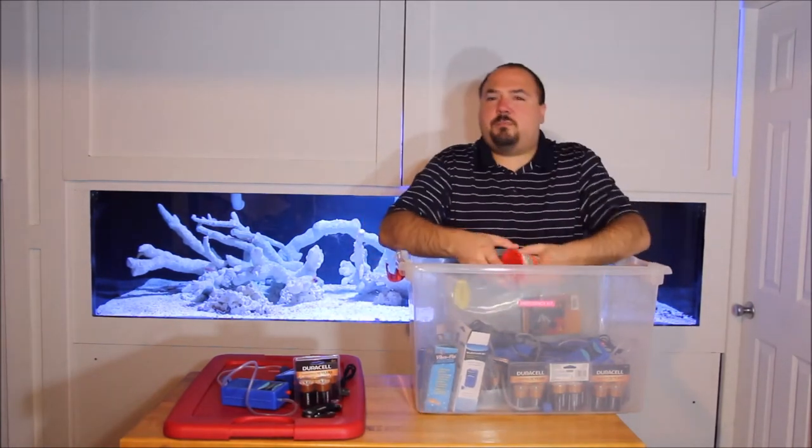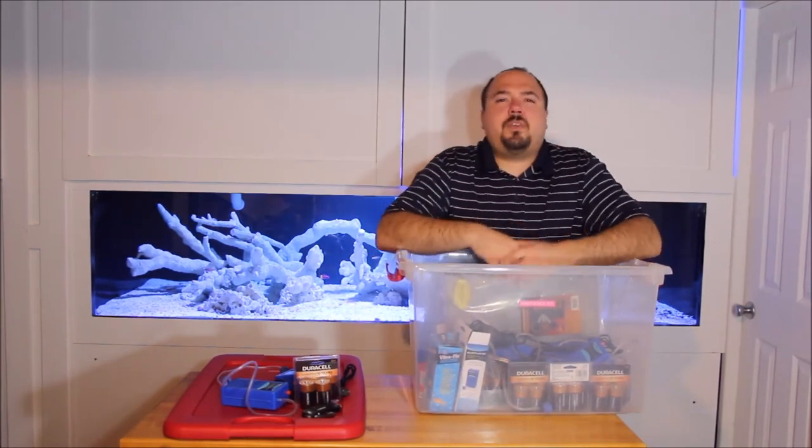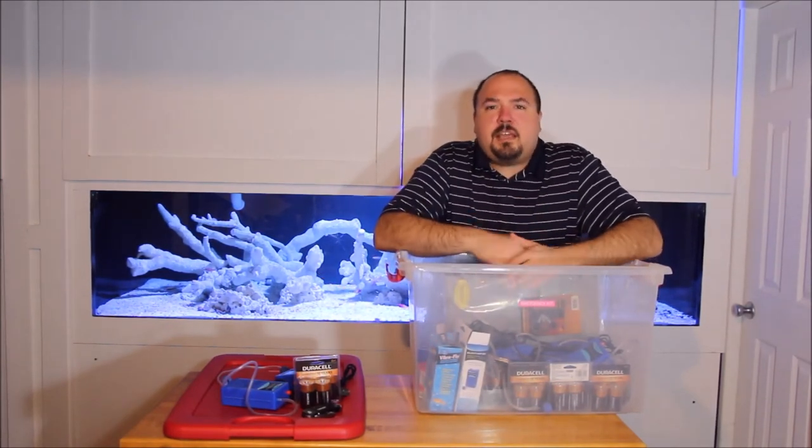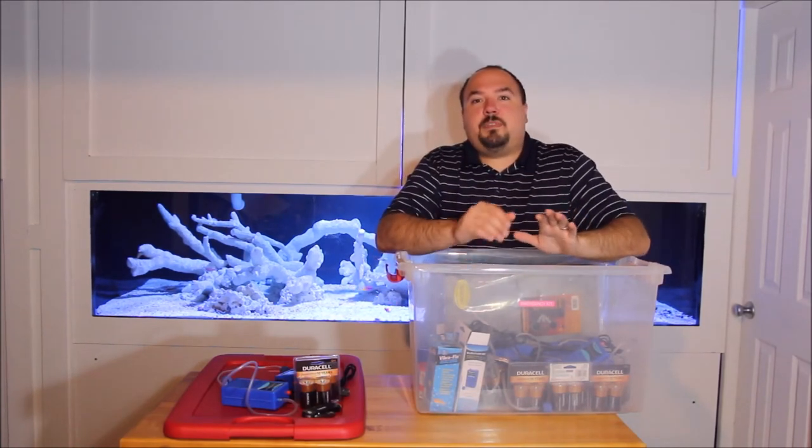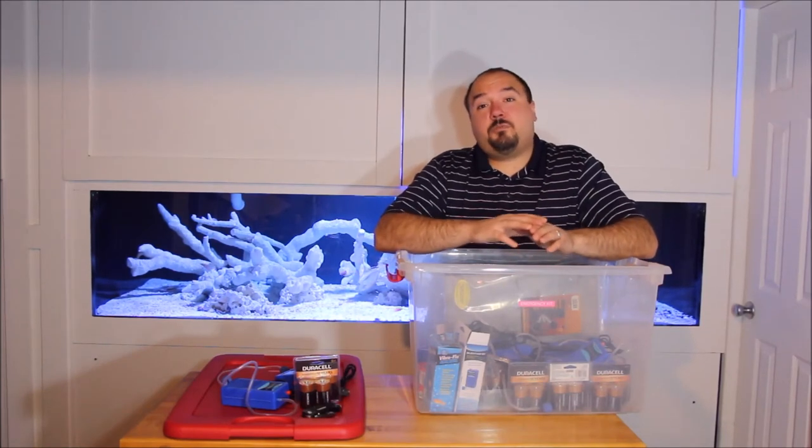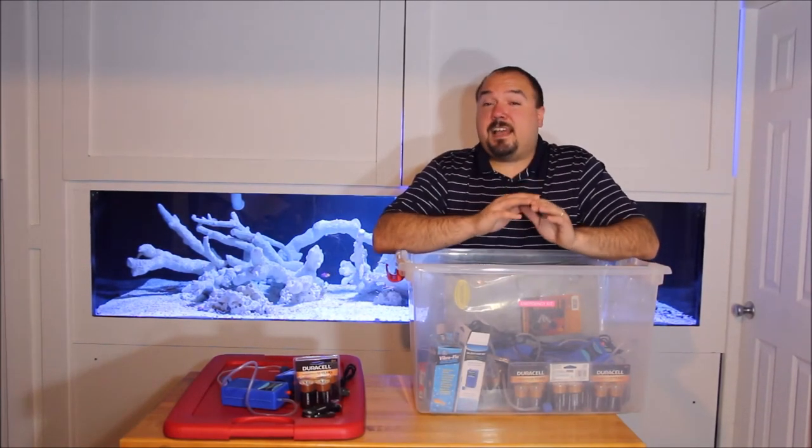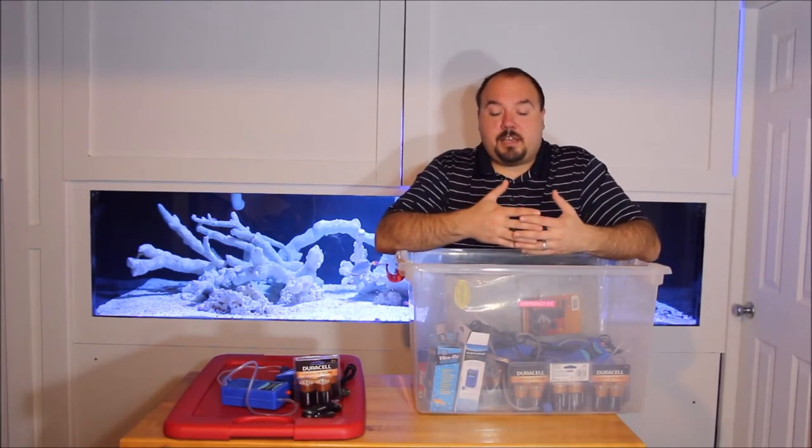One final thing I put in the kit for now is just some plumber's putty. I don't think it would serve that much of a use, but it's something to have handy if there is some kind of leak. Someone could put it over the top of that leak and maybe try to slow it down. I have seen this work with cracked aquariums where people have done this and it has stopped the leak temporarily until they could take bigger actions.